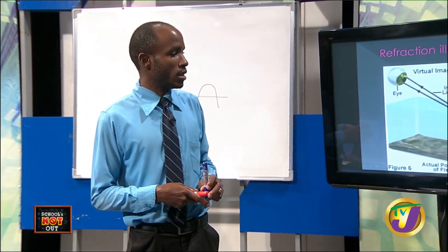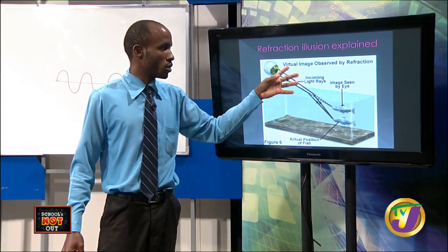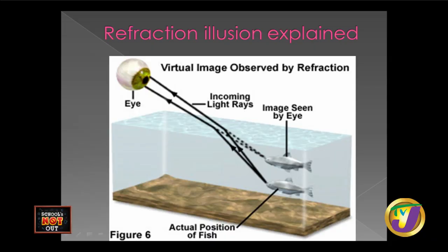Here's a diagram explaining why the straw appears bent. This is the observer — the eye. A virtual image is observed by refraction. Your eyes can only perceive what light enters them, but where the light is coming from may not be along a straight line. The actual position of the fish or pencil is here; when the light rays come from it and hit the boundary between water and air, bending takes place before it reaches your eye. Your brain assumes light travels in a straight line, so you perceive the fish as being at a higher position — but in reality it's actually lower down.